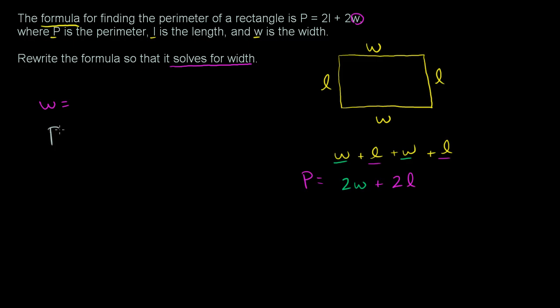So they tell us that P is equal to 2 times l plus 2 times w. We want to solve for w. A good starting point might be to get rid of the l on this side of the equation. To get rid of it, we could subtract 2l from both sides. So you subtract 2l over here, minus 2l. You're also going to have to do that on the left-hand side, minus 2l.